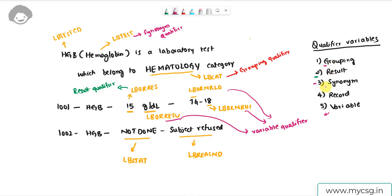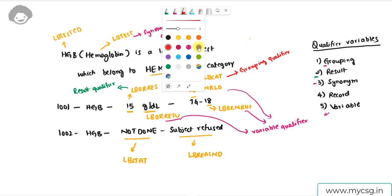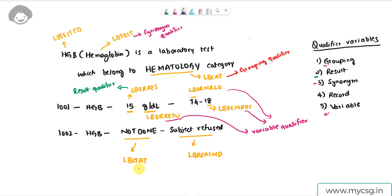We have now seen four different types: grouping, result, synonym, and variable qualifiers. Lastly, for subject 1002 where HGB was not done because the subject refused, this information is stored in LBSTAT and LBREASND. These two variables fall under record qualifiers, because they do not belong to any of the other four qualifier variable definitions.